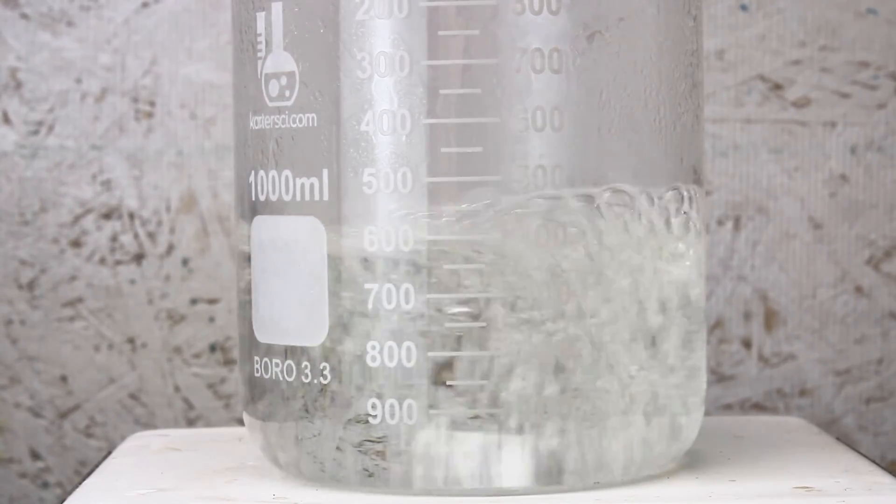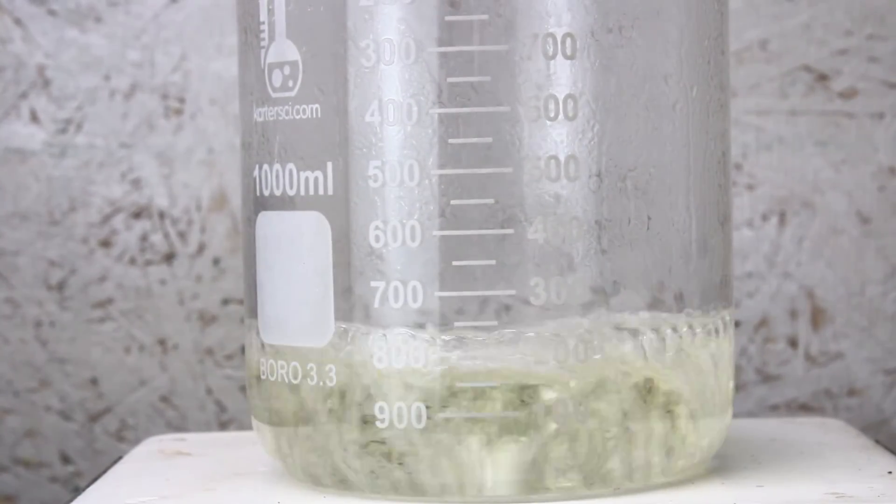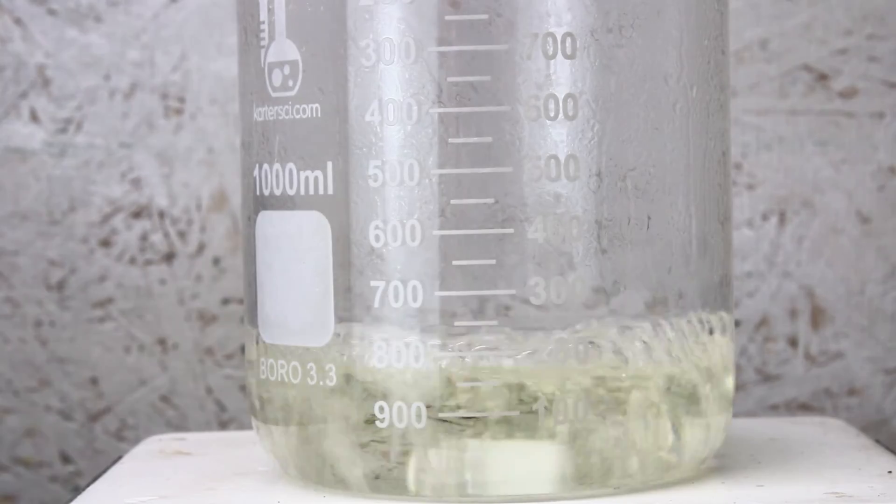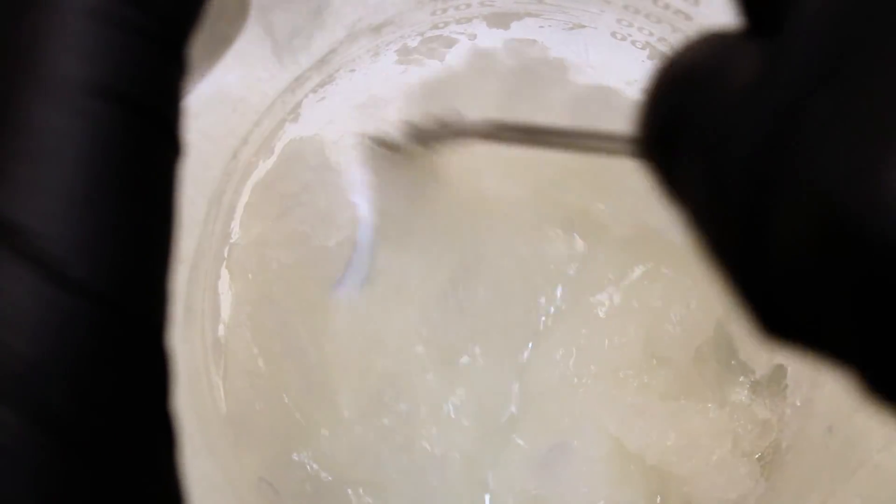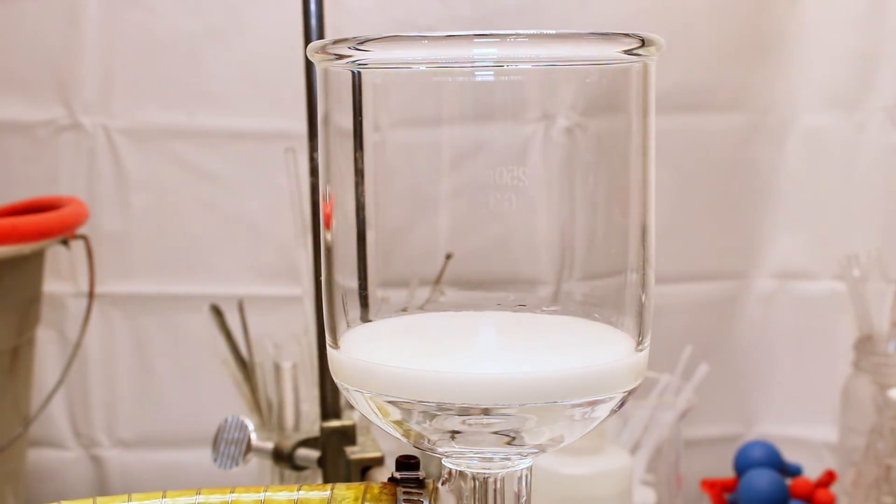To this end, I go ahead and boil down the solution from an initial volume of 600 milliliters to around 100 milliliters, and then I take it off the heat. The beaker is chilled to help potassium nitrate crystals form, and then I pass them through vacuum filtration to collect them.